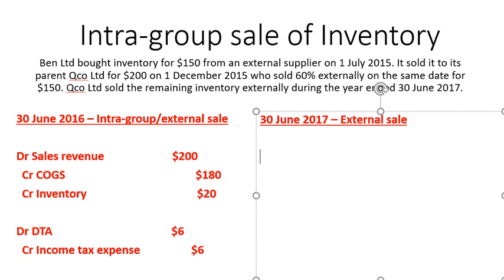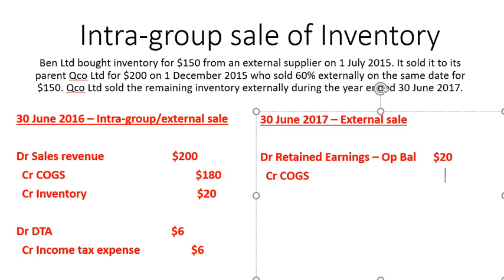Now we look at the external sale of the remaining inventory at 30 June 2017. The first thing we want to do is debit retained earnings opening balance by $20 and credit COGS by $20. Looking back at last year, we debited sales revenue by $200 — decreasing retained earnings — and credited COGS by $180, which increases retained earnings. The net impact was a $20 reduction to retained earnings. Because sales revenue and COGS are both closed to retained earnings at year end, to carry that adjustment forward we debit the opening balance of retained earnings.